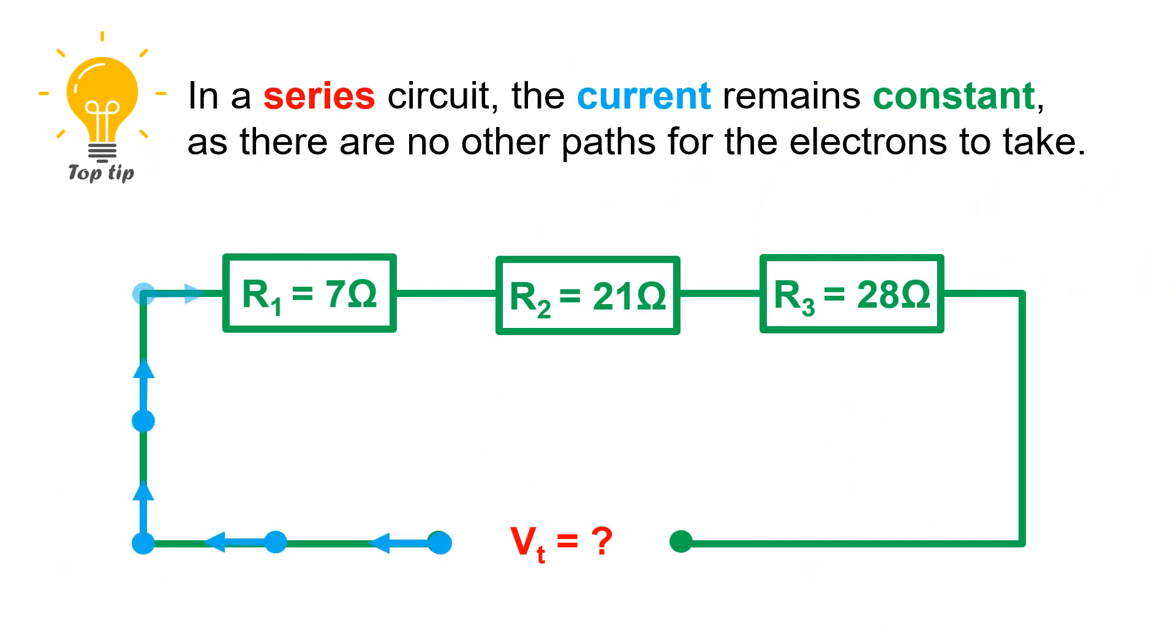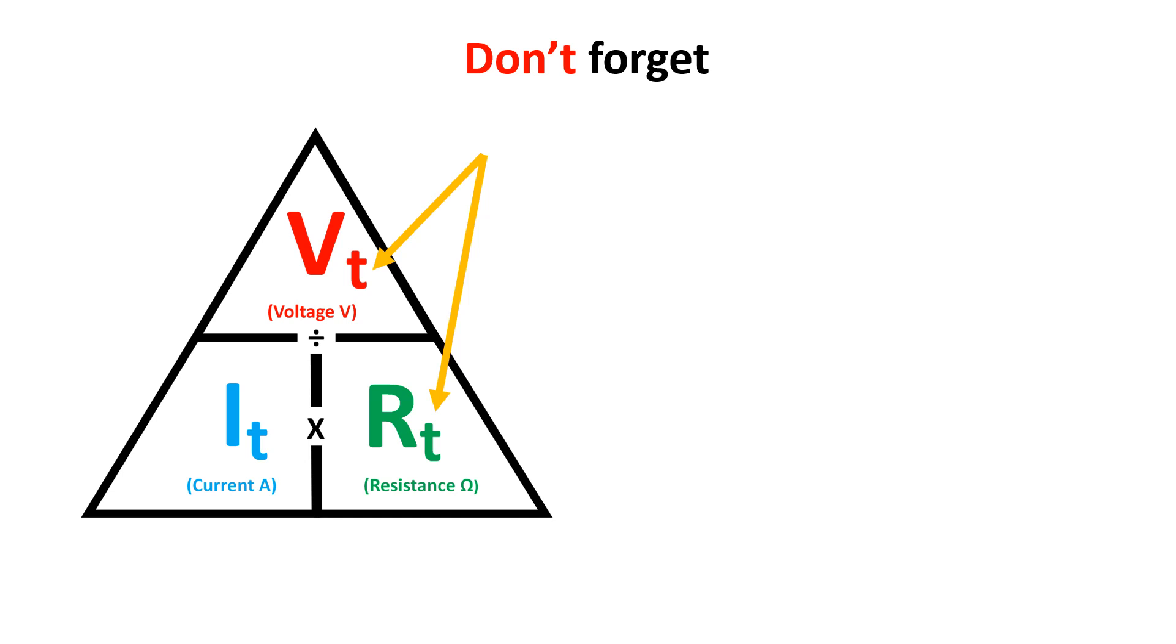Remember that the reason the current total is the key to series circuits is that the electrons travelling in a series circuit are like cars on a road. Because there are no branches, junctions or other routes to take their only choice is to stay on this road. Never forget that if we are using totals from VT, RT or IT we are finding the third unknown total within the circuit and this is represented by the T in the subscript.